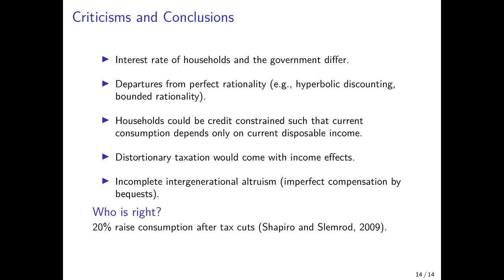So there are many reasons for departures from Ricardian equivalence. The empirical question is who is right. Shapiro and Slemrod in their 2009 paper analyzed what actually happened with the tax rebates in 2008 after the beginning of the Great Recession. They find that households increased consumption by about 20% of the tax cut they received. So Ricardian equivalence does not hold completely, but there is a strong argument that households save a significant portion of the tax rebate they receive.